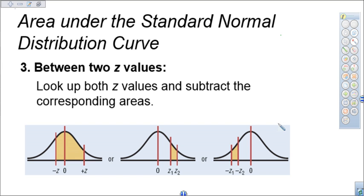Let's take a look at what happens if we're trying to find the area between two z-scores in a standard normal distribution curve. The thing to remember here is that we can find the area from a negative z to a positive z, from a positive to a positive, or from a negative to a negative.